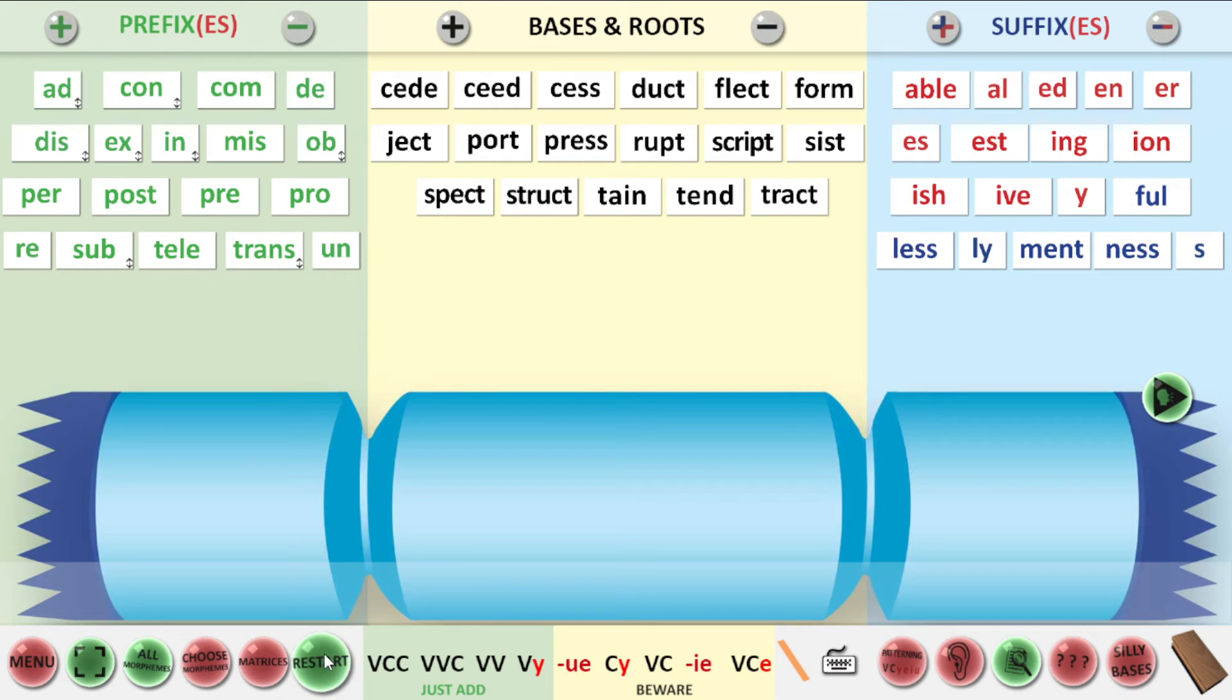All right. Now, the last one is going to be an absolute doozy. Okay. So we'll give you a head start. We're going to make sure we've got struct in the middle because this is about building. I would like you to make me a word which means not able to pull down. Not able to pull down. So I'm going to give you a clue. This is going to have two prefixes. And it's going to have a suffix. Not able to pull down or build down.